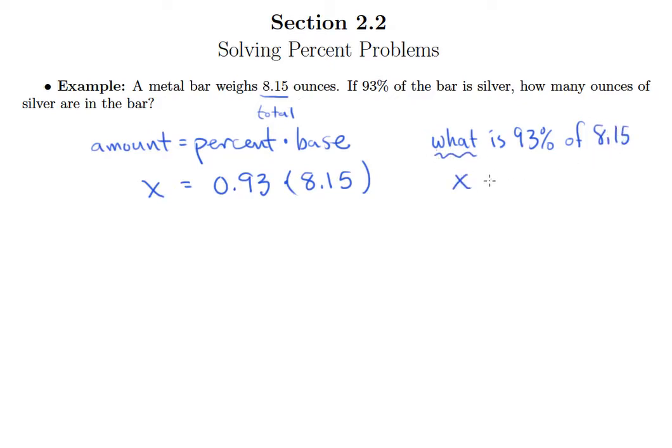What means x, is means equals, 93% is 0.93, and of means times. So either way, we get at the same thing.